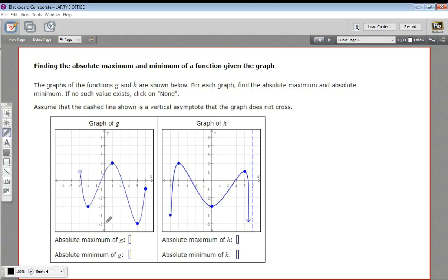For a graph like this one, function g, it's pretty easy. This function has endpoints, and we don't have arrows shooting off in any direction, so you can just read off the graph.